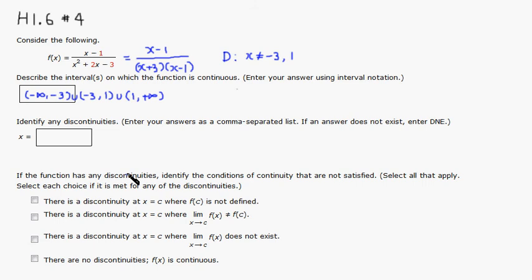Identify any discontinuities, so it looks like there are two of them: x equals negative 3, and also at x equals positive 1.